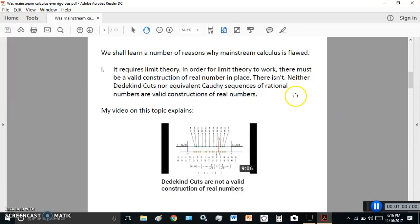So, the first reason that the mainstream calculus is flawed is that it requires limit theory. In order for limit theory to work, there must be a valid construction of real number in place. There isn't.